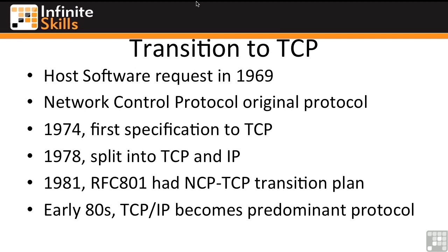In 1972 we get the first email, which is kind of interesting. Ray Tomlinson at BBN starts to send email, and that's when the first at sign was used. But in 1974 is where we actually get the very first specification for TCP published. At that point there was no Internet Protocol — TCP was the entire protocol, and TCP took on the functions that the IP portion now handles.